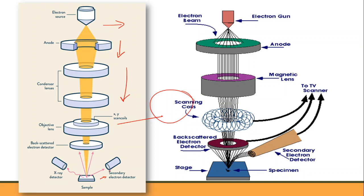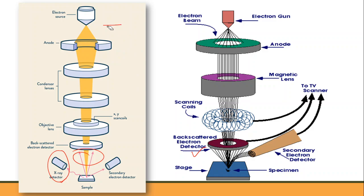When the electron beam touches the surface of the sample, it produces secondary electrons — electrons released from the sample surface. Electrons can also come back as backscattered electrons, or energy may be emitted as X-rays. The secondary electron detector collects these emitted secondary electrons, converts them into a signal, and sends it to the screen to produce the final image. Additional detectors for backscattered electrons and X-rays can also be placed.